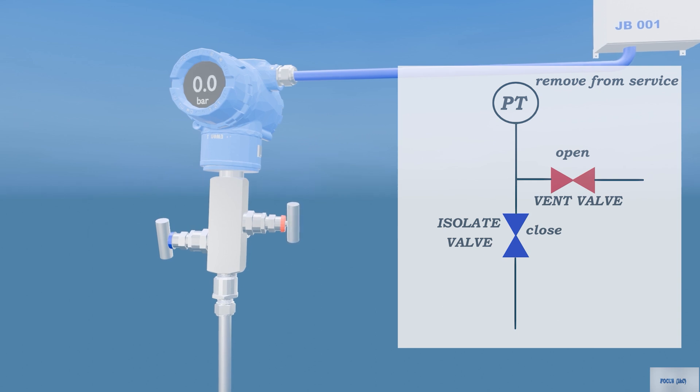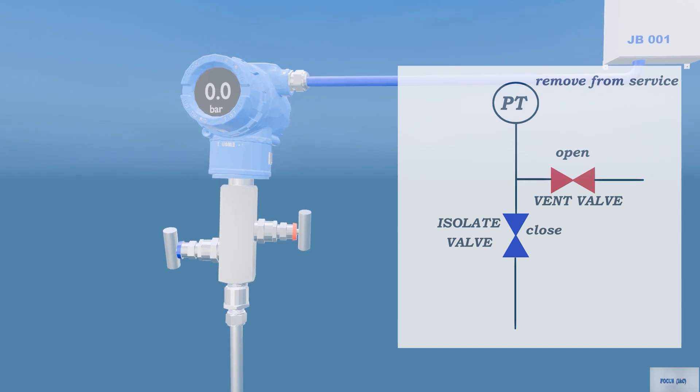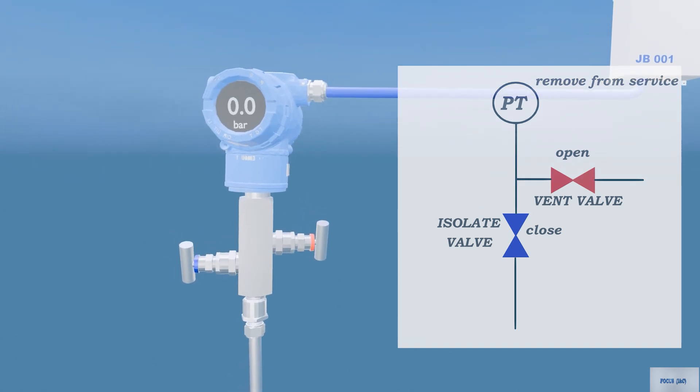A two-valve manifold is now correctly configured for zeroing or calibrating the transmitter.